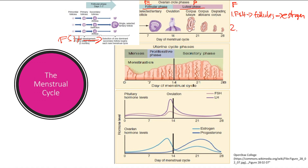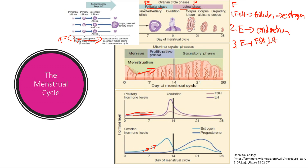Estrogen is now going to increase because its follicles are making more and more. Estrogen is going to act on the endometrium and cause it to grow — because that's what estrogen does. The other thing it's going to do is estrogen is going to block FSH and LH production. But FSH and LH are also stimulated by GnRH, so there's a nice little balancing act, and these two levels remain fairly stable.